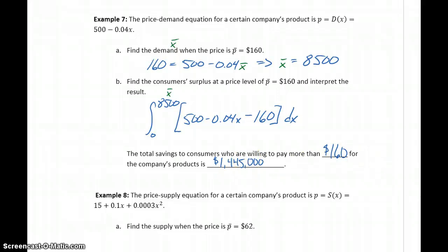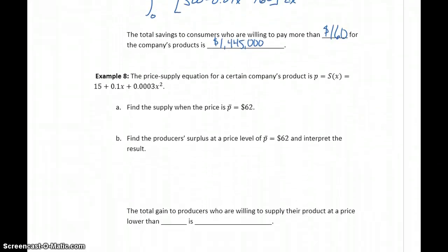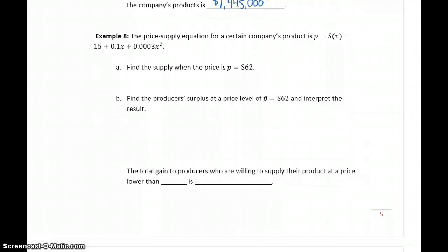We can look at answering the same type of question, in this case with a producer surplus. So here we're given a price-supply equation, which is a little bit more complicated. We're given a price of P bar equals $62. So we would use the same process we used in part A before. We would take the $62 and set it equal to our price-supply equation.